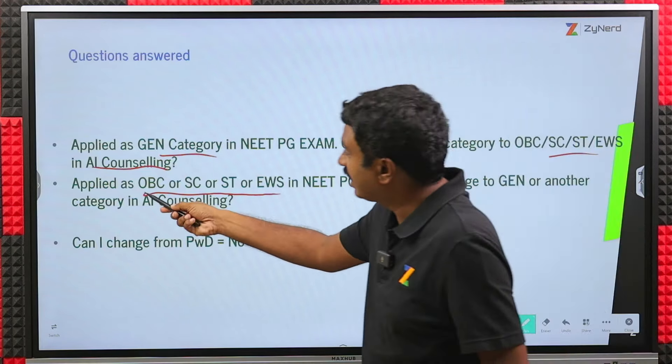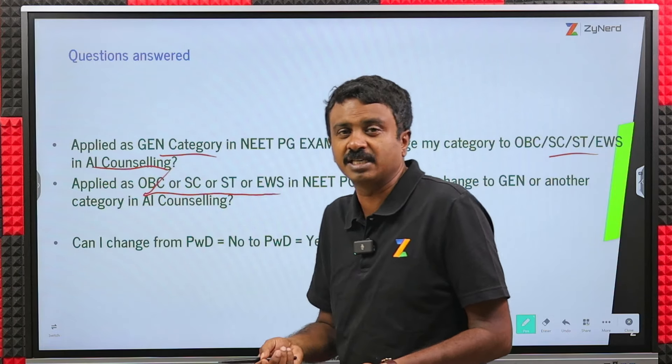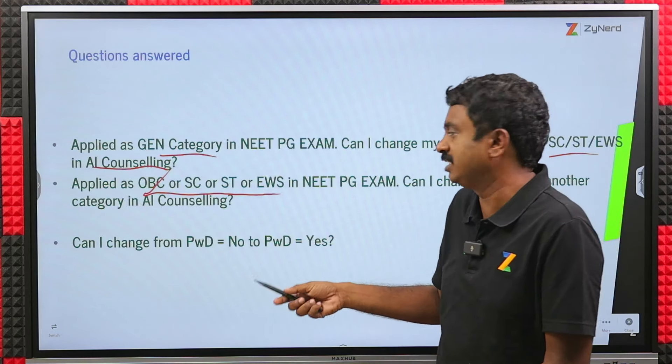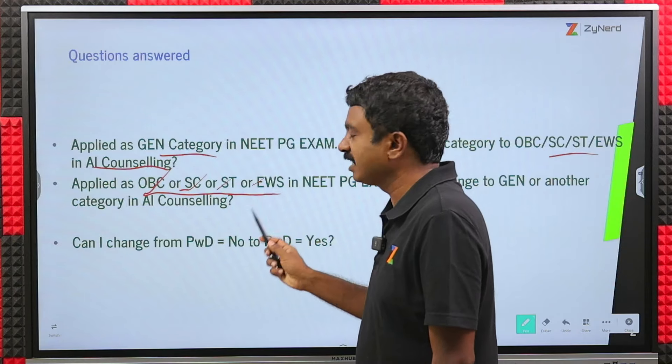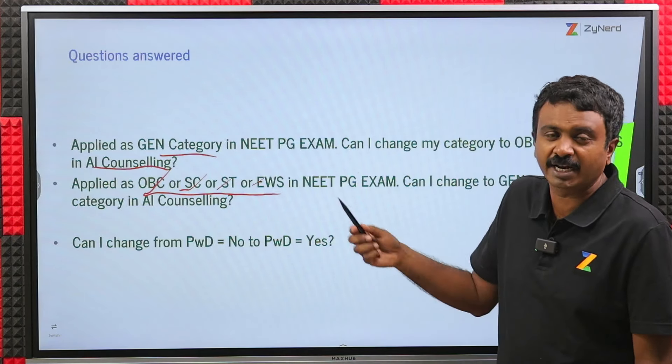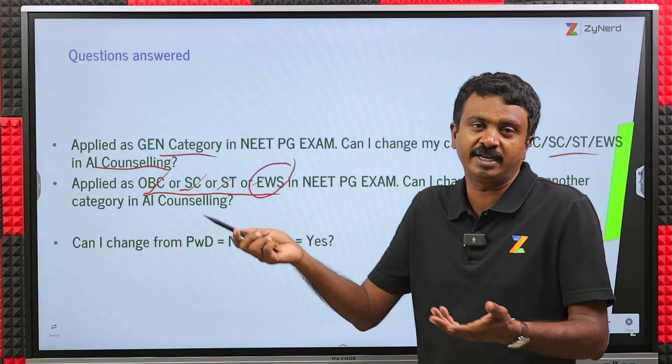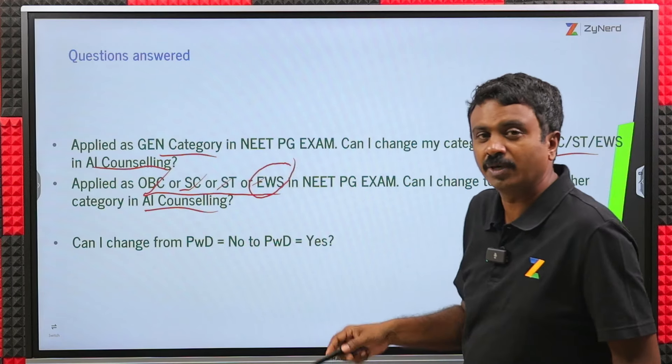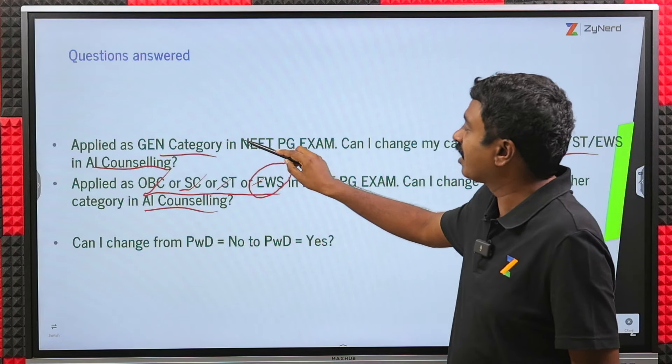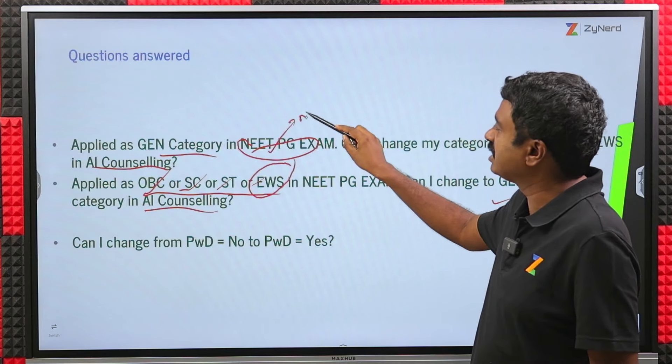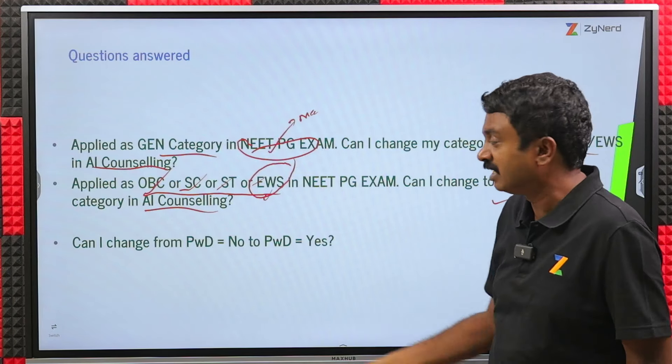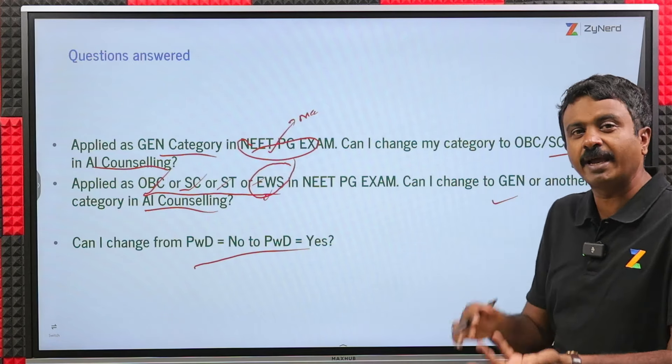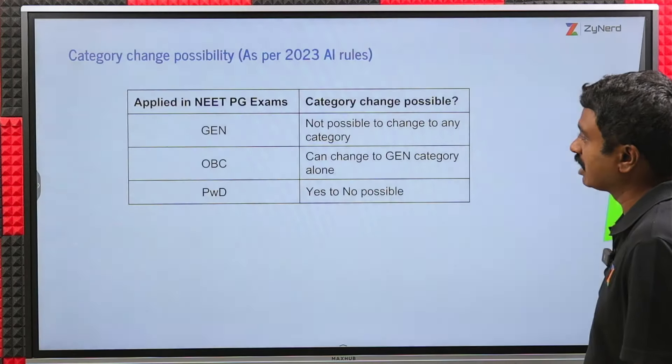I just realized I belong to a particular category. Can I do that? I applied as OBC or SC, ST or EWS in NEET PG Counseling. Can I change to GEN? I applied as OBC NCL but I did not know that non-creamy layer existed. I was OBC A in my state, I thought it was the same as OBC here. Or I applied under these categories thinking that I will get a certificate. But right now I realize for EWS I am not getting a certificate. Can I change to GEN in All India Counseling? Same for PWD too. I did not apply as PWD, can I change it? I applied as PWD, can I change it? Those are the queries we will answer.